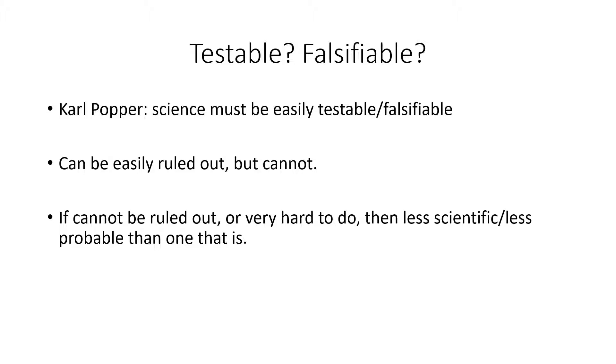Another criterion for the best explanation is how testable it is or how falsifiable this is. This comes from a philosopher of science, Karl Popper, who made an argument to find out whether something counts as scientific or unscientific is based on how testable or falsifiable it is. And that's when how easily we can rule out a proposed explanation.